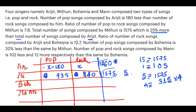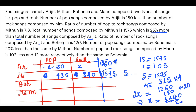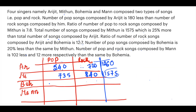Let's find Arijit's pop and rock values. Rock plus pop equals x + (x − 180) = 2x − 180 = 1260, so 2x = 1440, giving x = 720. Therefore Arijit's rock songs = 720 and pop songs = 720 − 180 = 540.